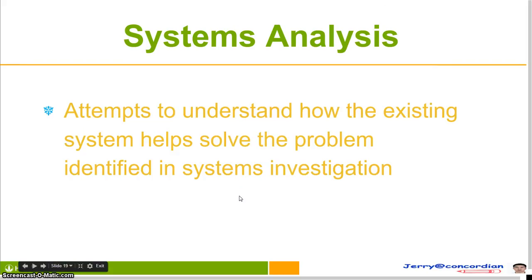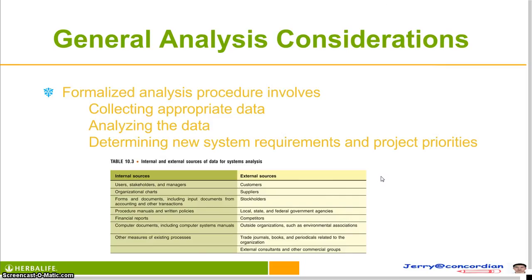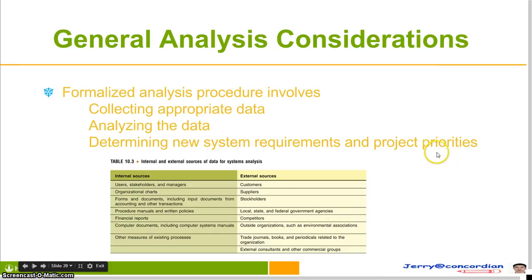Overall, the aim is to gather data on the existing system and the requirements for a new system, and to consider alternative solutions and their feasibility. General analysis involves three different parts: collecting appropriate data, analyzing the data, and determining new system requirements and project priorities.